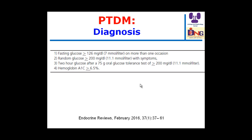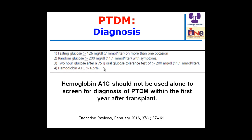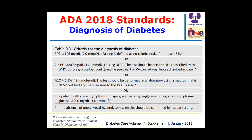The definition of diabetes is based on clinical criteria: fasting plasma glucose exceeding or equal to 126 mg/dL on more than one occasion, or a 75-gram oral glucose tolerance test result of more than 200 mg/dL, or hemoglobin A1c above 6.5%. However, HbA1c should not be used alone to screen or diagnose post-transplant diabetes within the first year, as it underestimates the diagnosis.